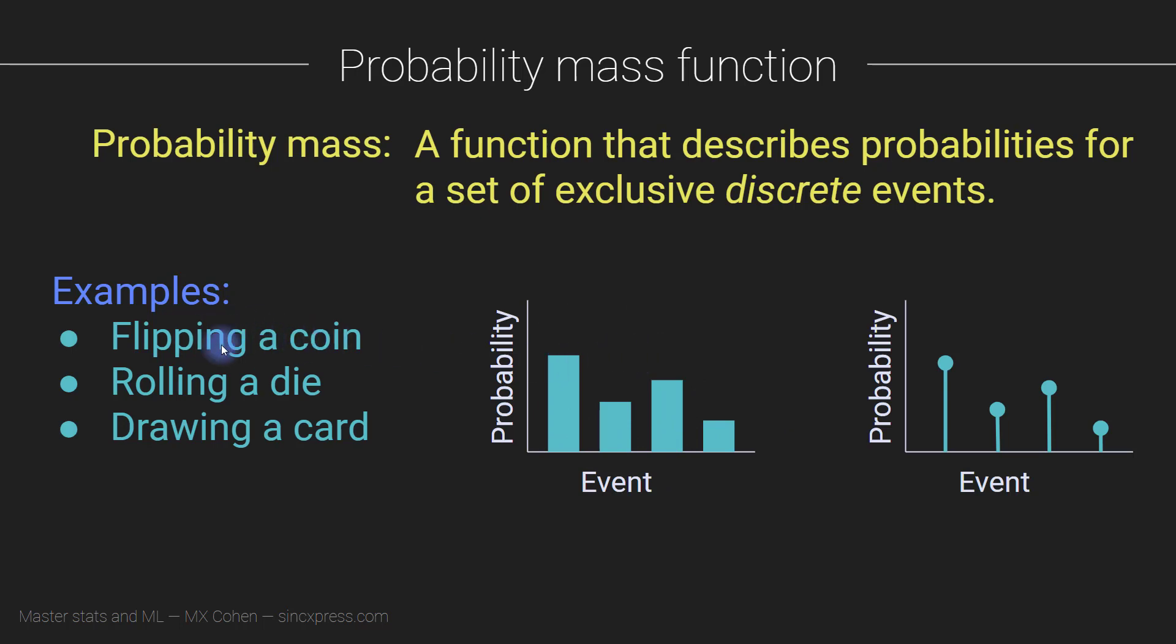And here's a few examples. So flipping a coin, in that case, our probability mass function would only have two bars in it, and they would both be at the same height, right? Because we have a 50% chance of heads, 50% chance of tails. Rolling a die would have a probability mass function with six bars, because we can roll, assuming it's a six sided die, any one of those sides.